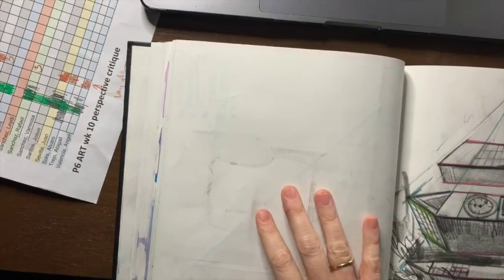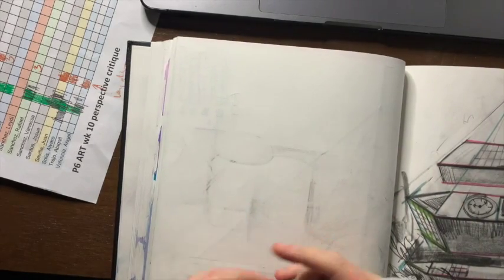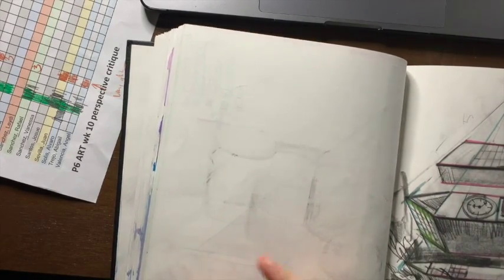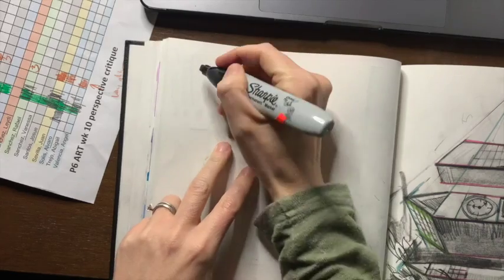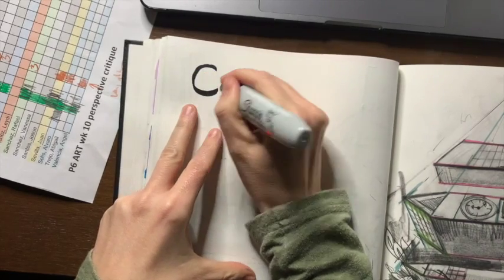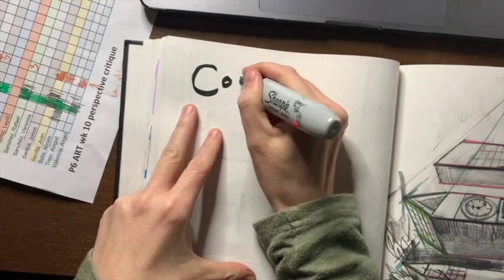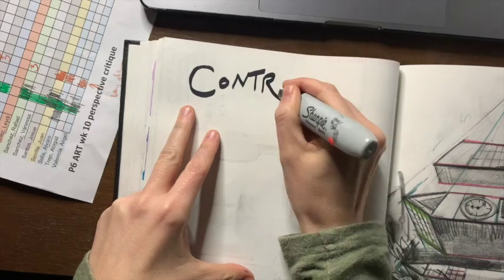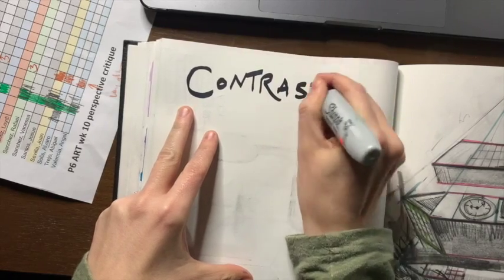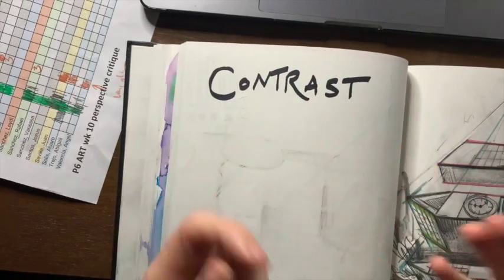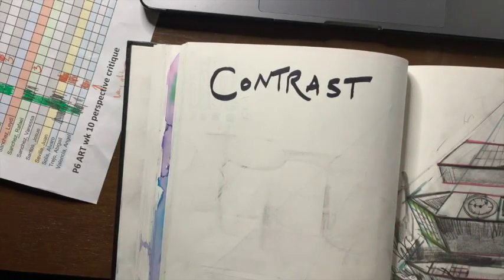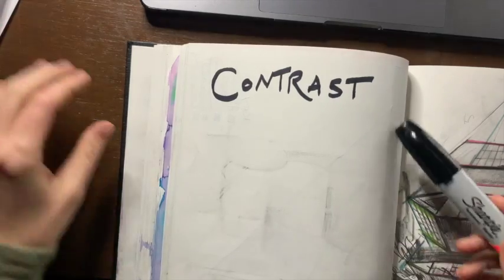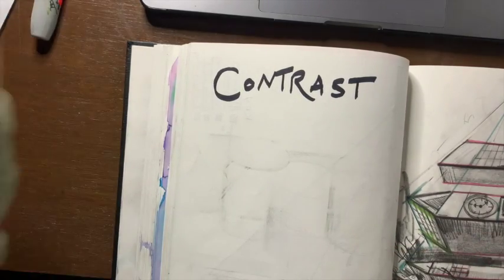Hi everyone. I found an open page in my sketchbook, and before I do my visual journal page where I show that I understand what contrast is — contrast is a principle of design — I really suggest that you kind of organize your colors into different piles.